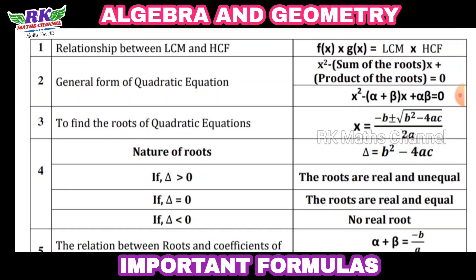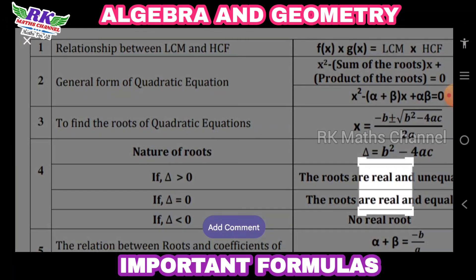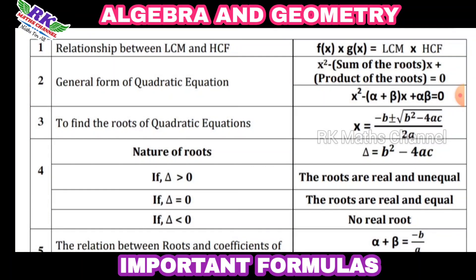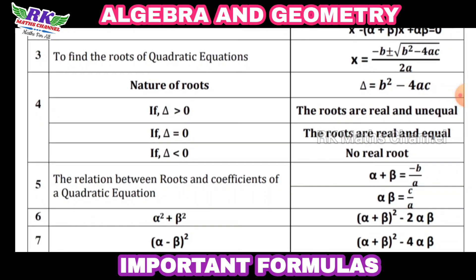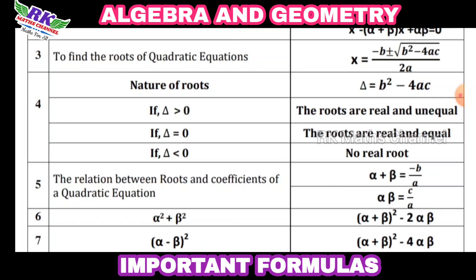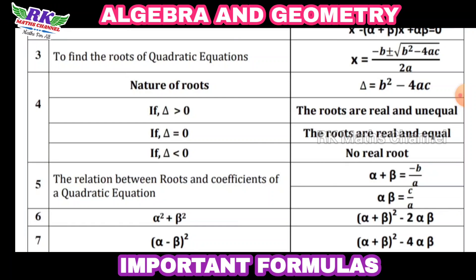Next is the nature of roots — a very important topic, worth 5 marks and 2 marks. The discriminant, Delta, is defined as: Delta = b² − 4ac.